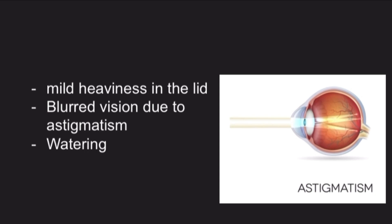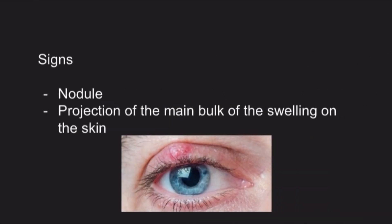Other clinical features include mild heaviness over the lid and blurred vision due to astigmatism. Astigmatism is a change in the curvature of the cornea — normally light passes through the cornea and reaches the retina in a single pathway, but in astigmatism the light is scattered and reaches the retina at multiple points. The patient also experiences watering of the eyes, which is called epiphora.